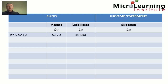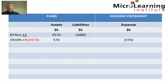Firstly, brought forward in November 20X2, we have assets and liabilities as given to us in the question. The expected return on the plan assets is 6%, so 6% of the opening plan assets of $9.57 million is $570,000. This expected return is treated as a deduction of the expense recognised in the income statement in the period.